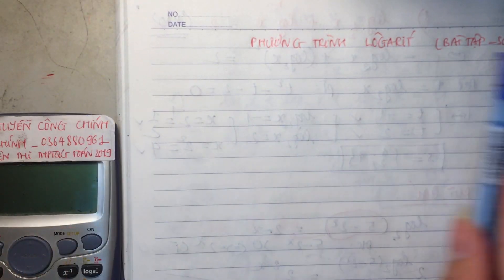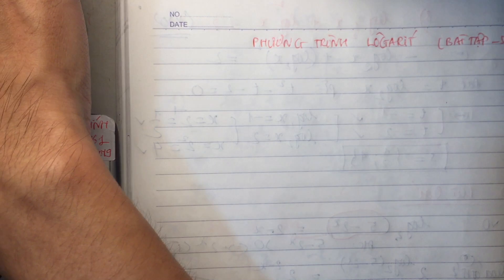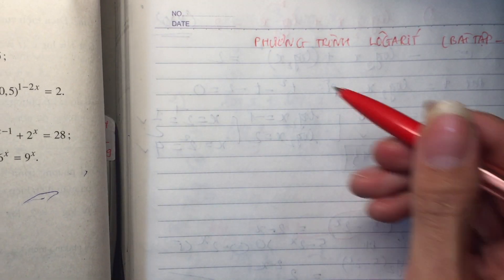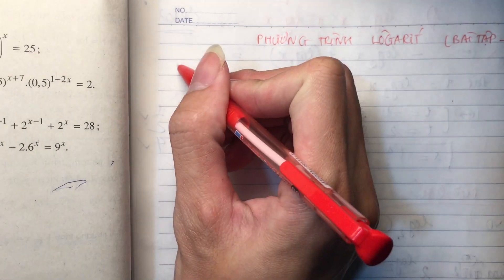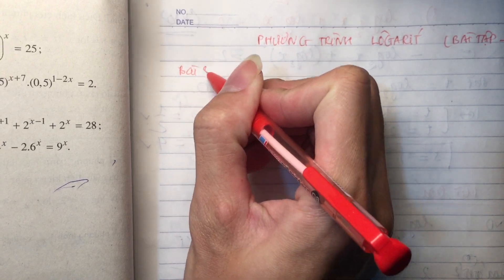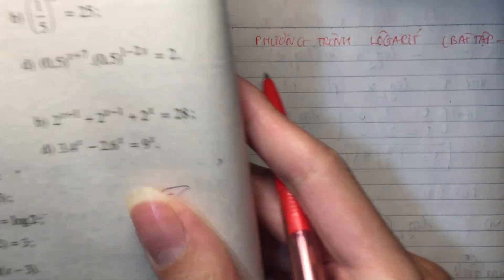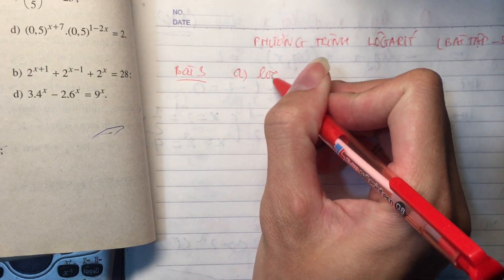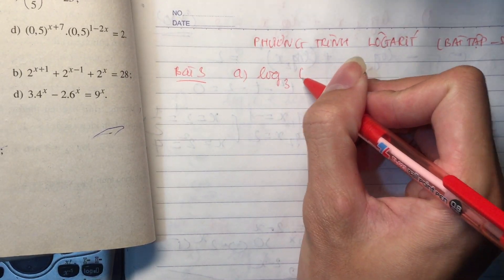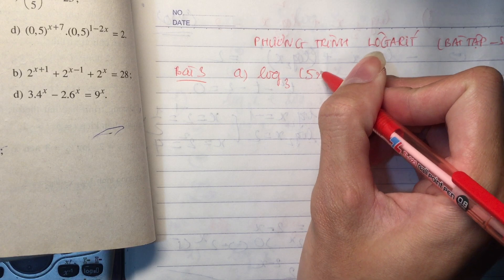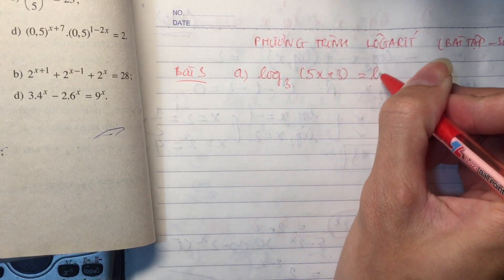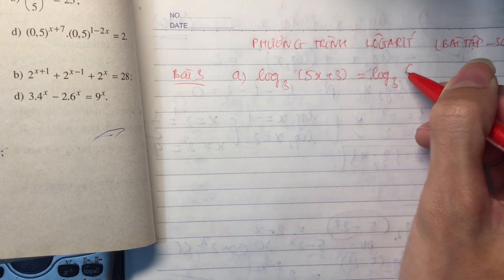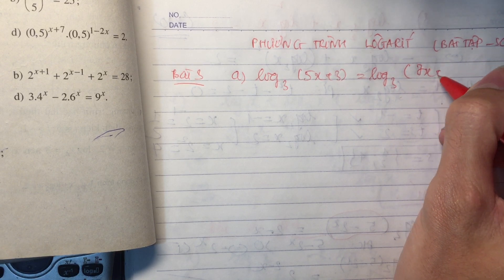Đầu tiên, nắm đúng các hướng giải của phương trình đi đã bằng các phương pháp cơ bản đã học. Chúng ta có bài tập số 3. Ta mở sách giáo khoa trang 84. Phương trình thứ nhất, câu A: logarit cơ số 3 của 5x cộng 3 bằng logarit cơ số 3 của 7x cộng 5.